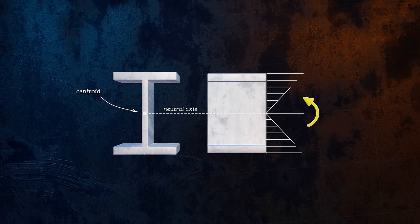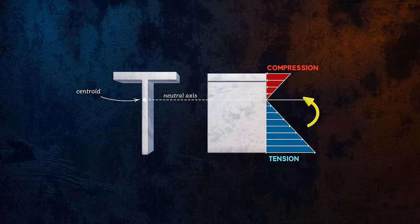The I-beam is a commonly used cross section because it has a large area moment of inertia, which results in lower stresses. Here's how the bending stresses are distributed over an I-beam cross section: they are zero at the neutral axis, and reach a maximum at the outside surfaces of the flanges. For a T section, the neutral axis is shifted upwards, and so the bending stress distribution looks different. So we've established how to calculate the bending stresses, which are normal stresses, for a case of pure bending.